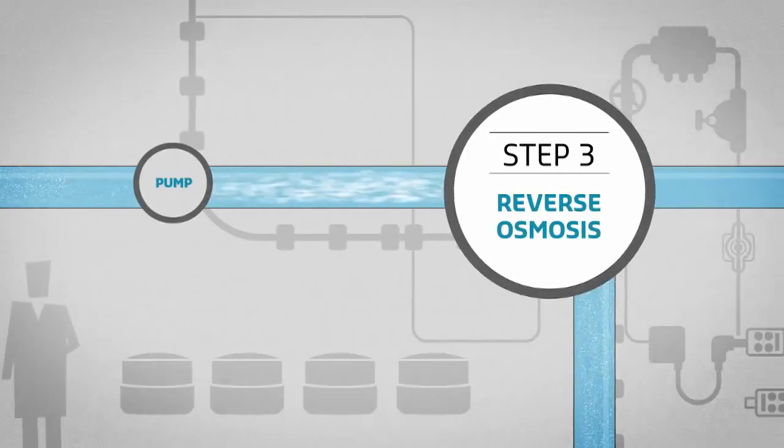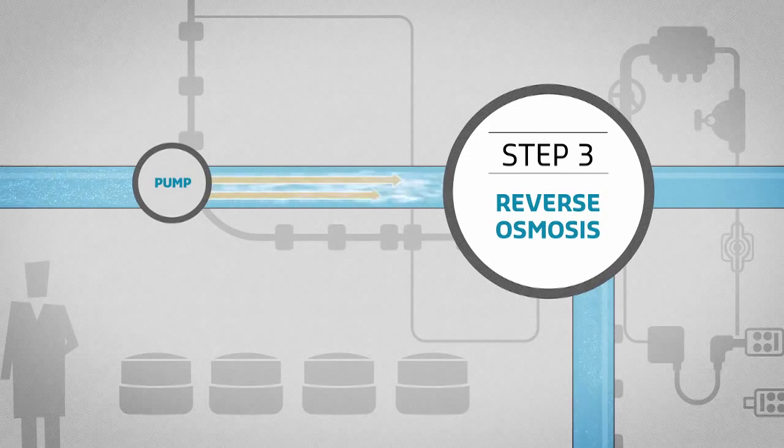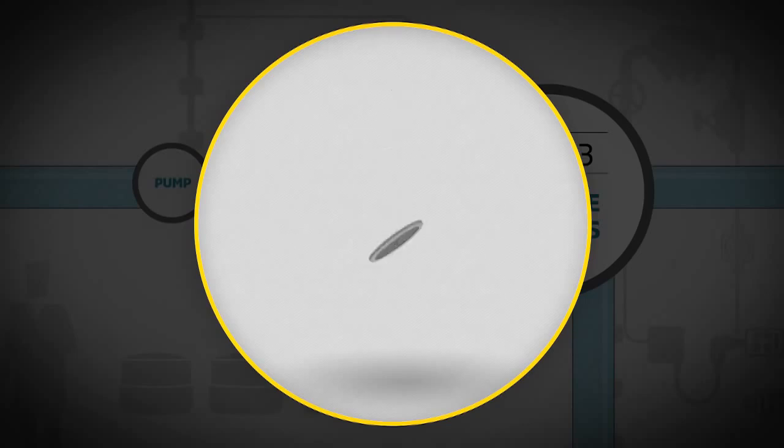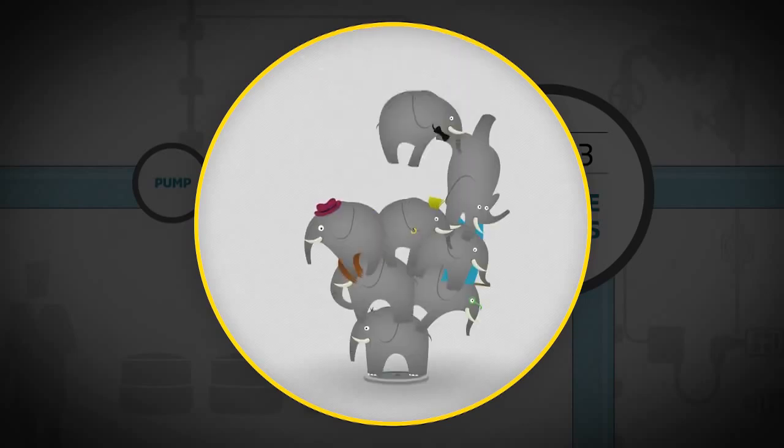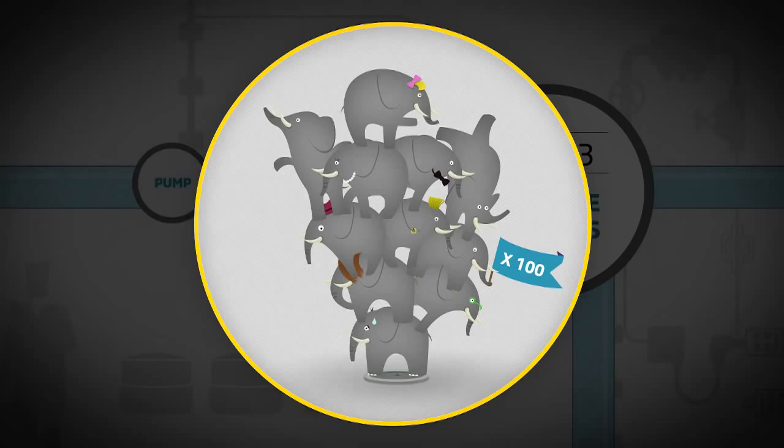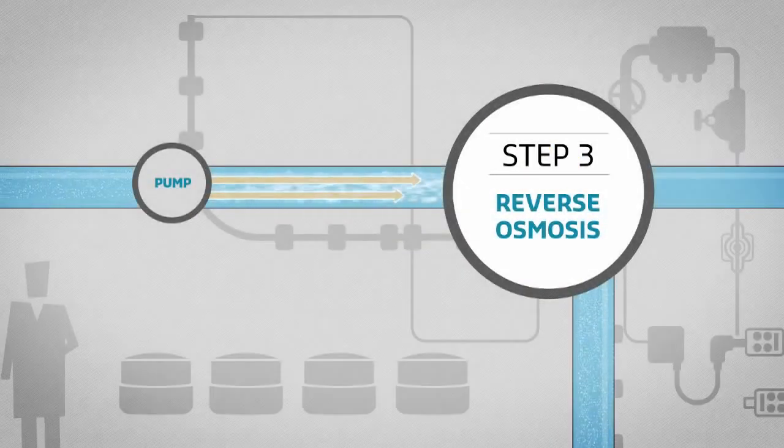The salt water is then sent at a very high pressure through an extremely fine membrane. The pressure exerted on the water during this process is equivalent to 100 elephants standing on a manhole cover. This is called reverse osmosis.